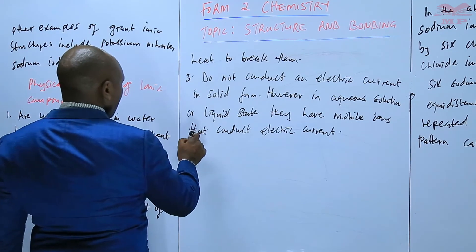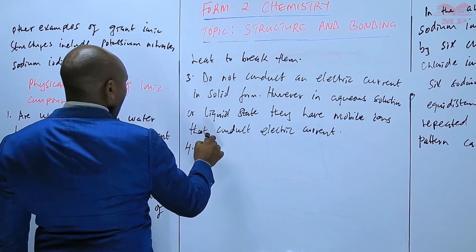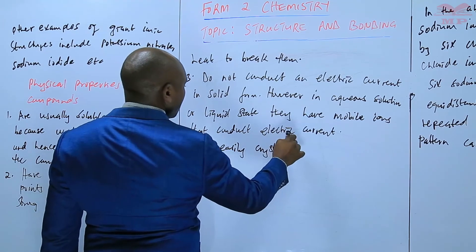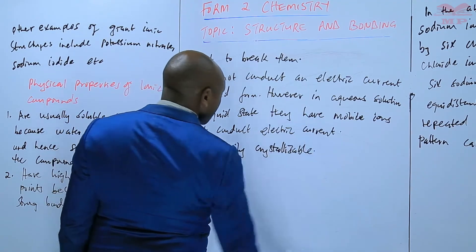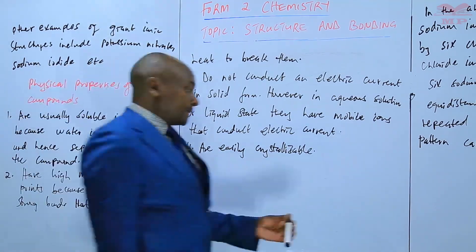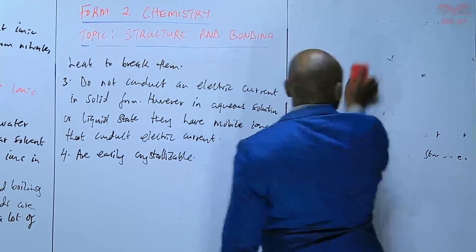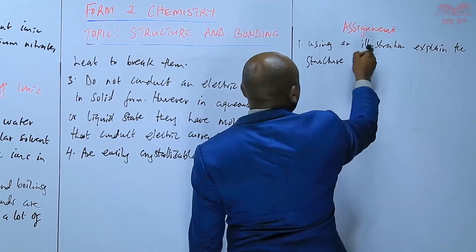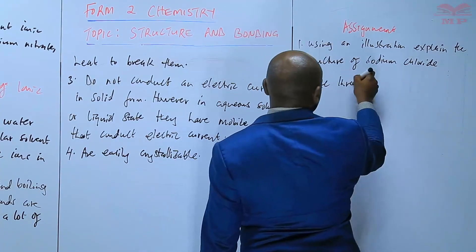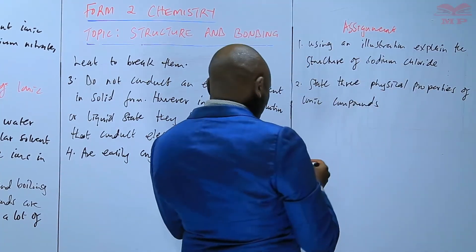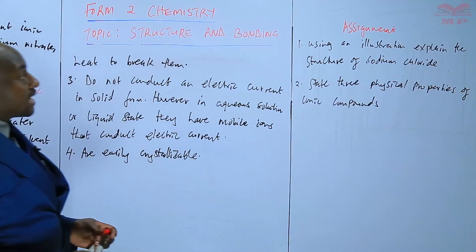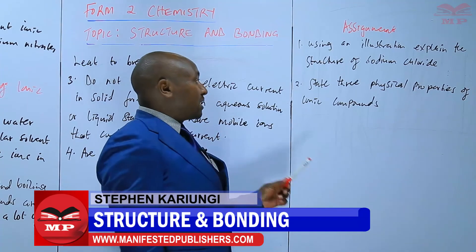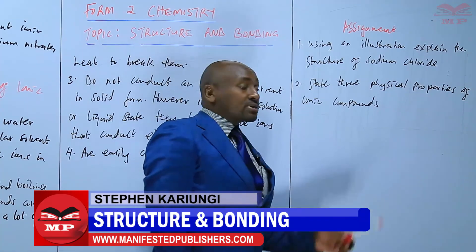Also, ionic compounds are easily crystallizable — they are easy to change into crystals. So to summarize: using an illustration, explain the structure of sodium chloride; and state three physical properties of ionic compounds.